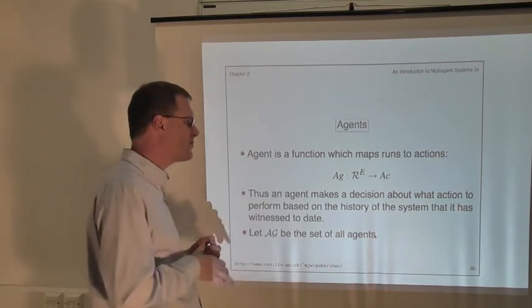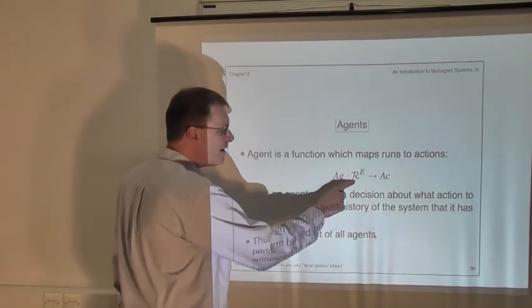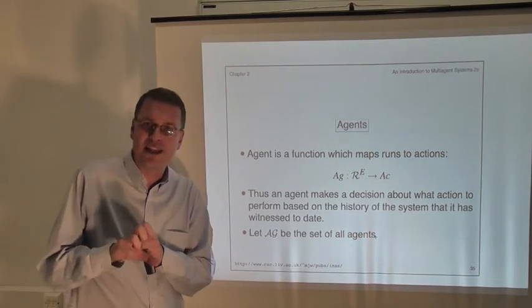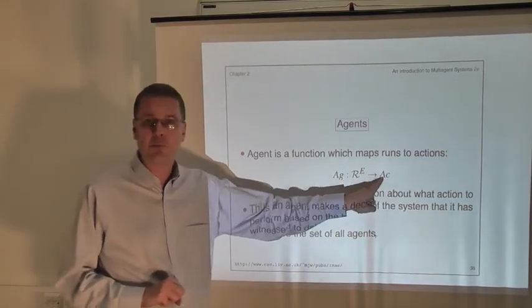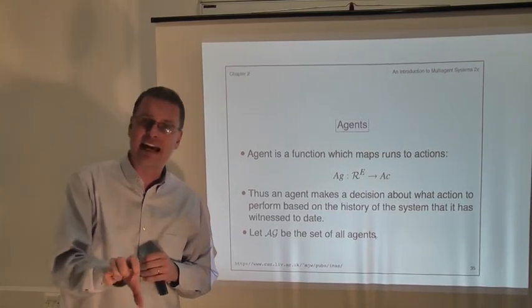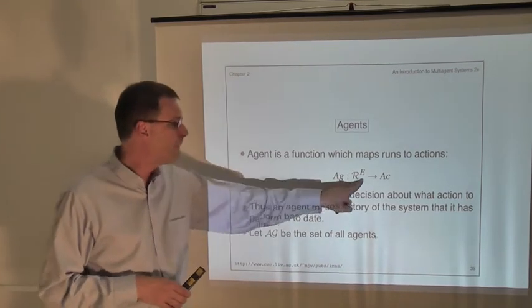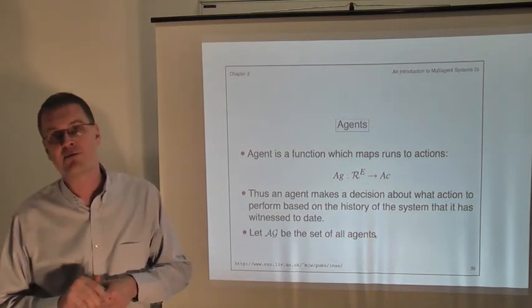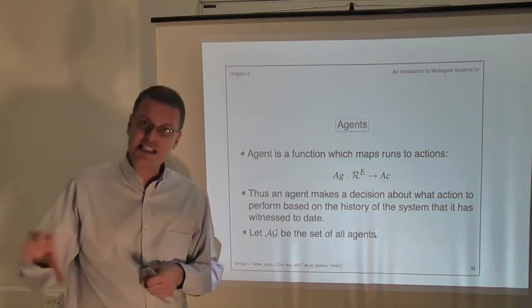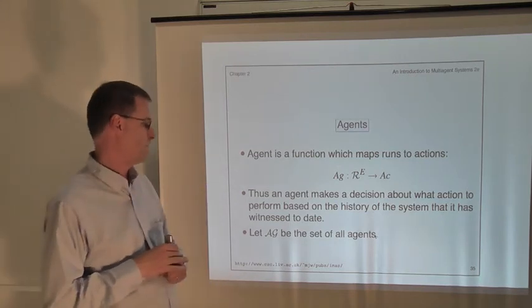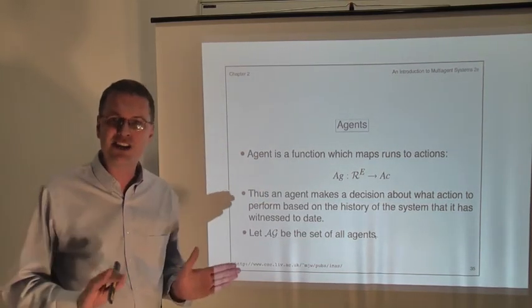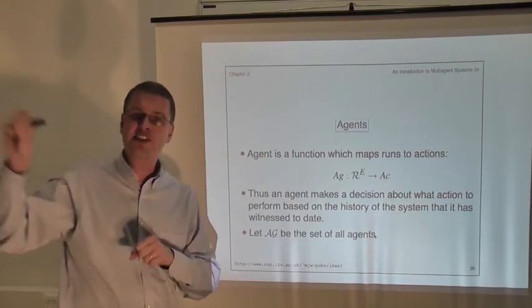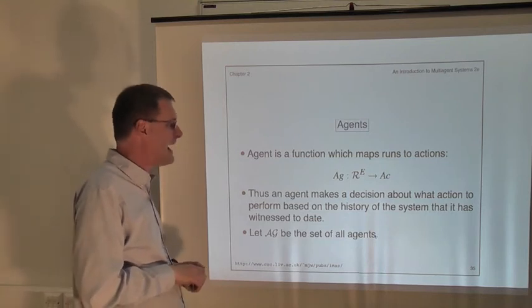What about agents? We model agents in a similar but slightly more restricted way. We model an agent as a function which takes as input a run where the last thing that happened was the environment changed state, and it gives as output an action — the action that the agent would choose to perform given it had seen that run. The output is a single action, and that's the key difference between agents and environments: we're assuming that agents have to be deterministic. Given the same sequence of events, they will choose the same action. This isn't telling you how agents go about making that decision — it's just saying, for each possible history of the system that could arise, this is what our agent would choose to do.